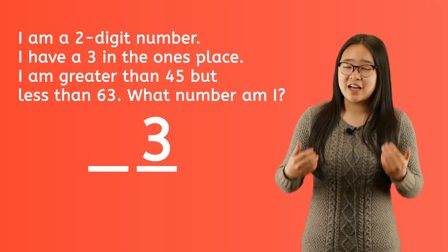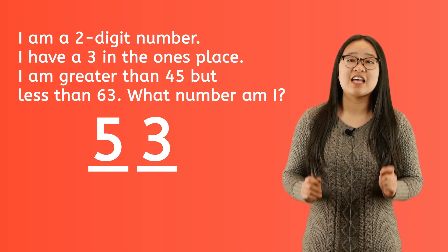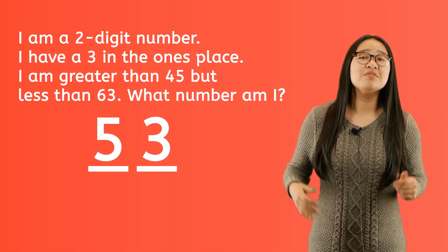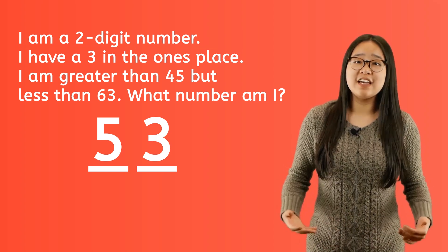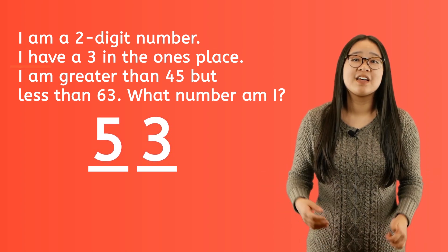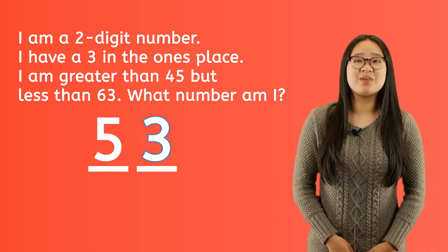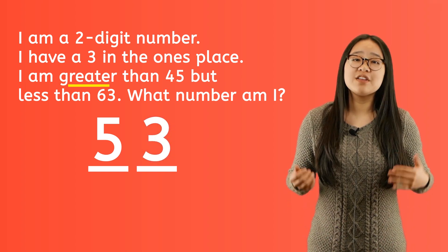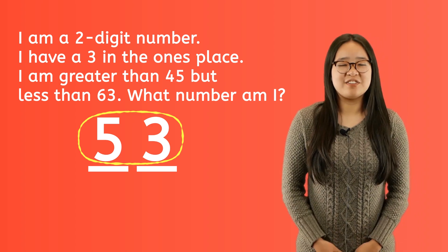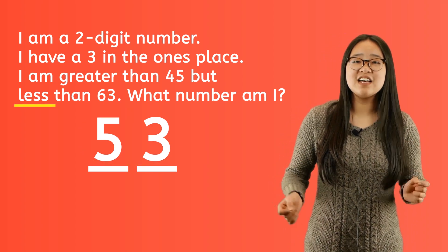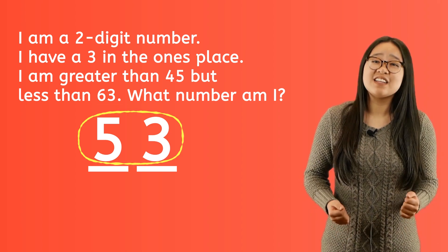Can you now make an educated guess to solve this problem? If you guessed five in the tens place, that makes the final answer 53. To know if we're right, let's read the whole problem again. I am a two-digit number — yes, we have two digits. I have a three in the ones place — yes, we have a three in the ones place. I am greater than 45 — yes, 53 is greater than 45. But less than 63 — yes, 53 is indeed less than 63.